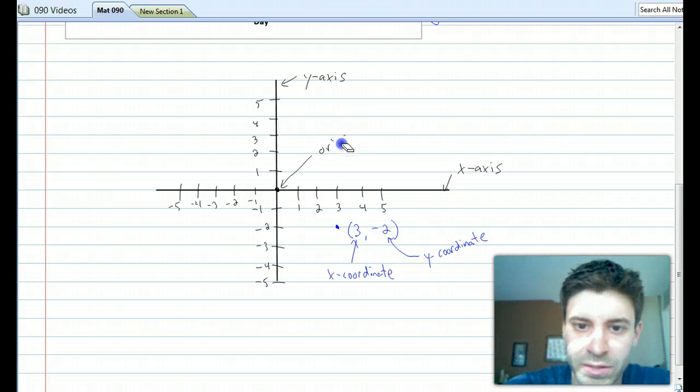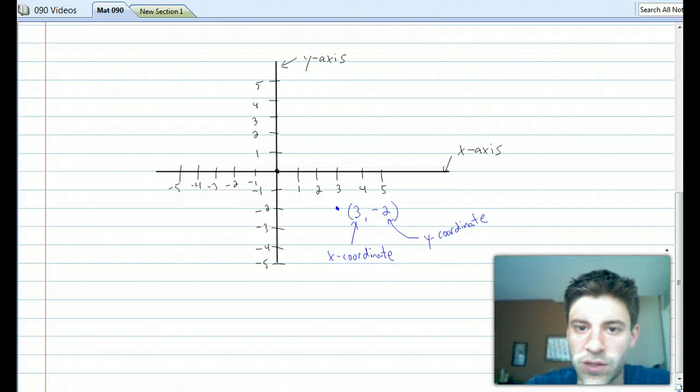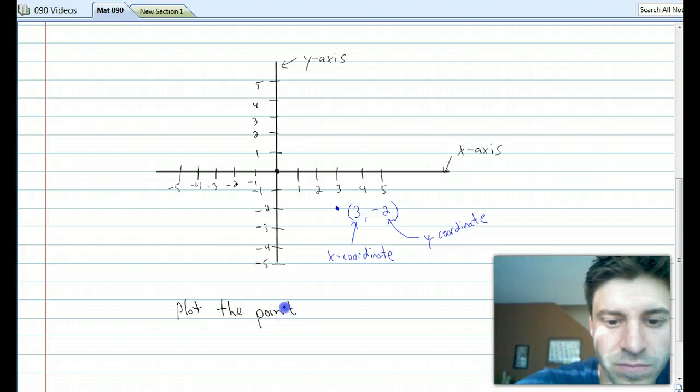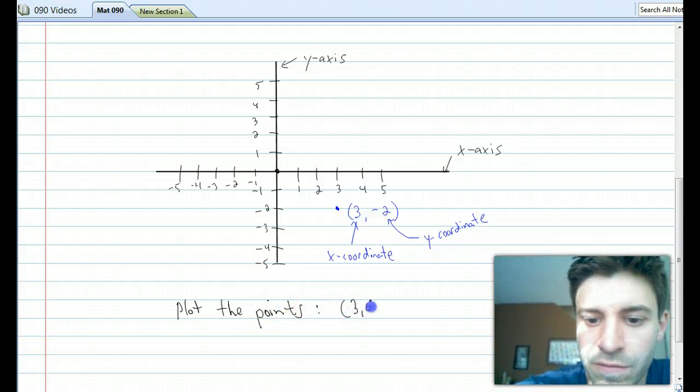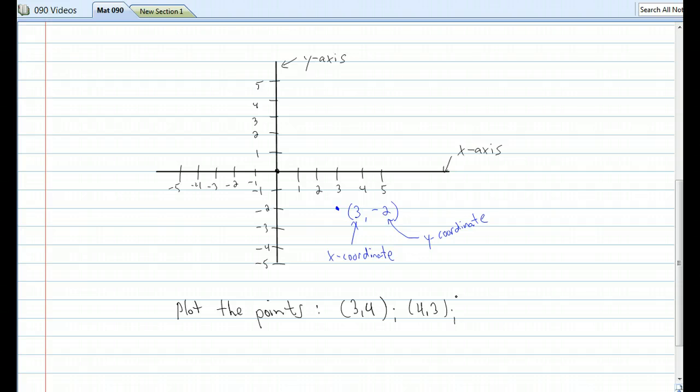Now I'm going to get rid of this label of the origin, it is at 0, 0. And what I want you to do, is I want you to draw a few points on your own x and y axis, or your own x, y plane, as we call this. So, plot the points: 3, 4, 4, 3, negative 2, 5, and negative 1, negative 4. Try to plot those points, see what you can do. Hit pause on the video, and we'll do it together here when you come back.